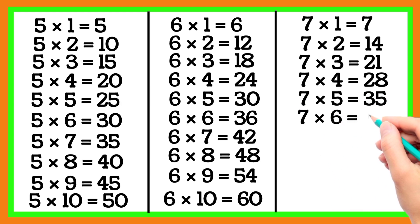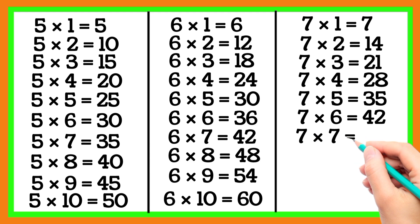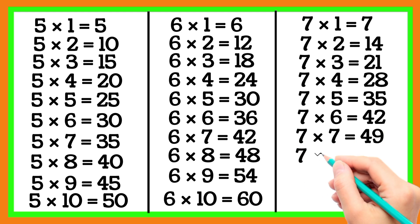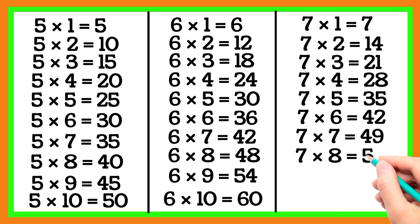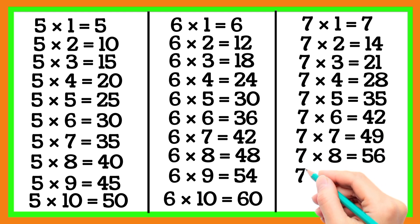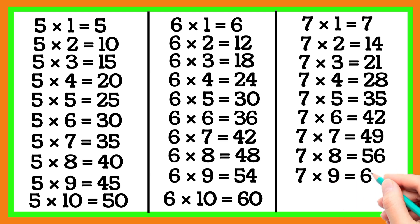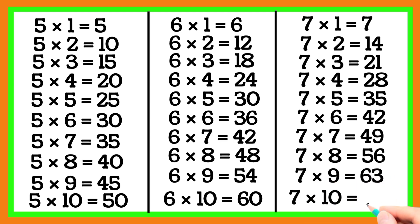7 6 is 42, 7 7 is 49, 7 8 is 56, 7 9 is 63, 7 10 is 70.